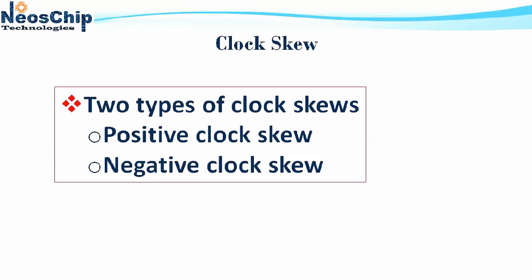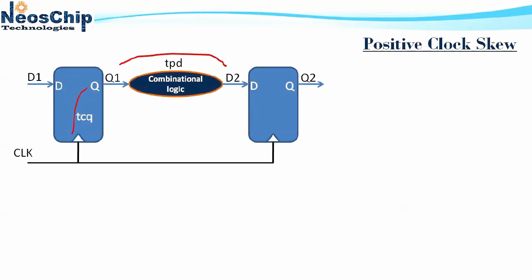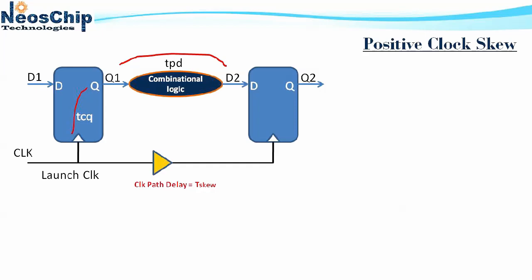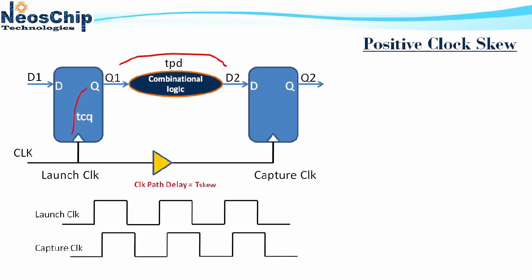Coming to clock skew, there are two types: positive clock skew and negative clock skew. Let's discuss positive clock skew with an example. This is a sequential path — sequential logic that exists in a normal digital design with two flops and combinational logic in between. This is a flop-to-flop path. Clock skew is nothing but a delay in the clock network. From the primary clock we have the launch clock, and that same clock goes to the capture clock. The skew between them is due to network path delay, and we call it T skew.